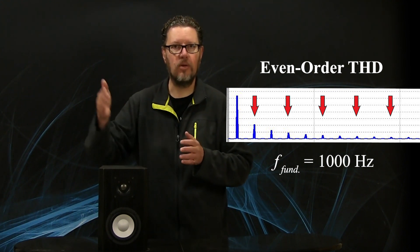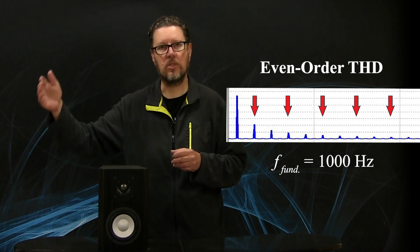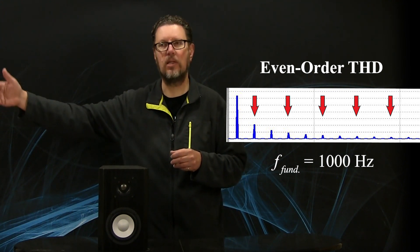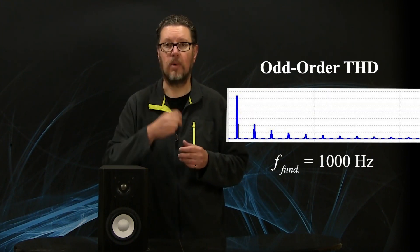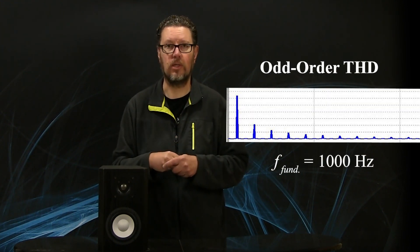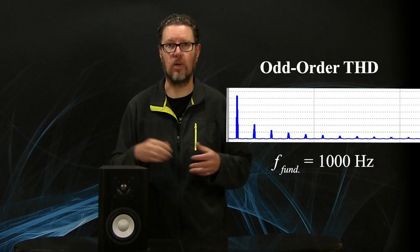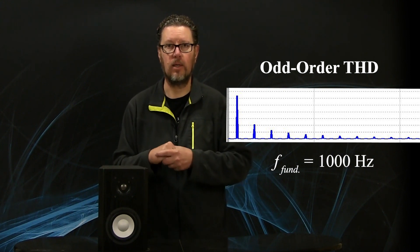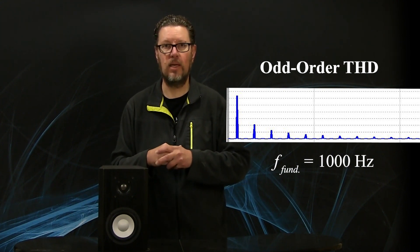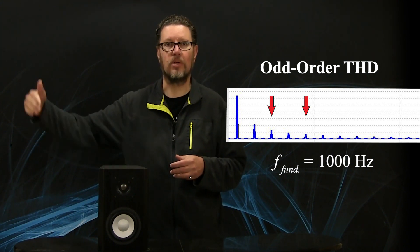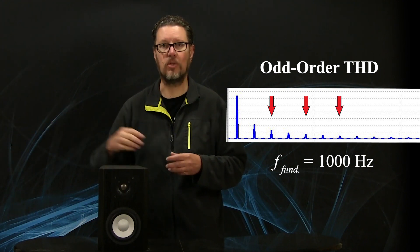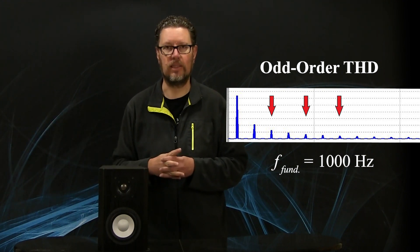So even order harmonic distortion would appear at 2,000, 4,000, 6,000, 8,000 hertz, et cetera. You'll also have something called odd order harmonic distortion — that would be at 3,000 hertz, 5,000 hertz, 7,000 hertz, et cetera.